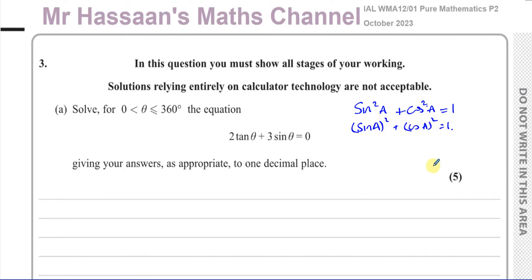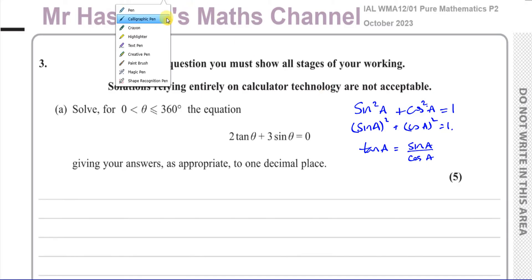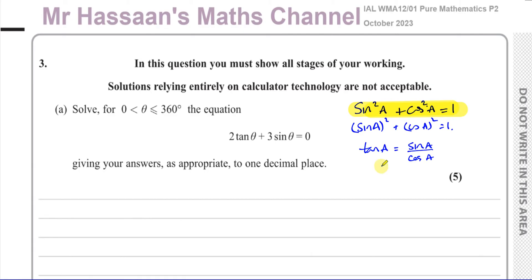The second very important identity is that tan of an angle equals the sine of the same angle over the cosine of the same angle. These are the two fundamental identities upon which all other identities are based.